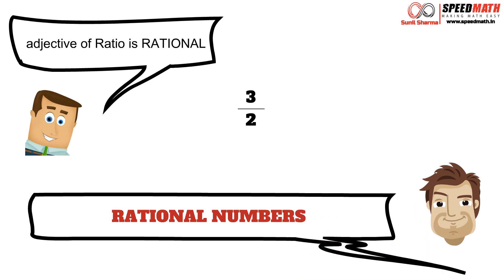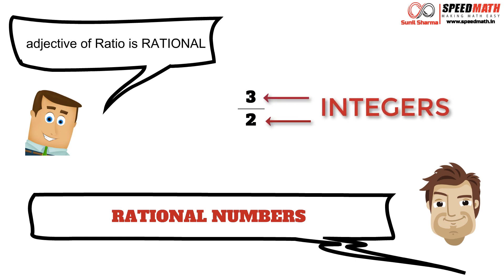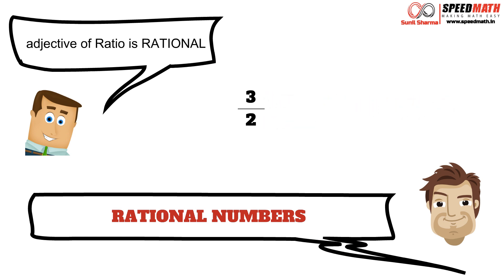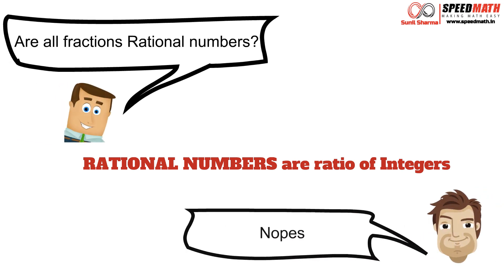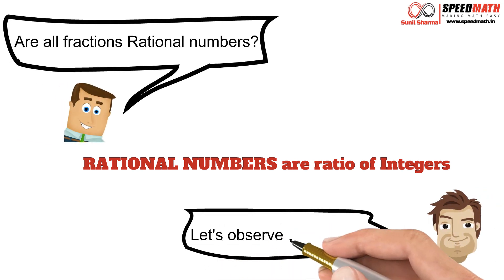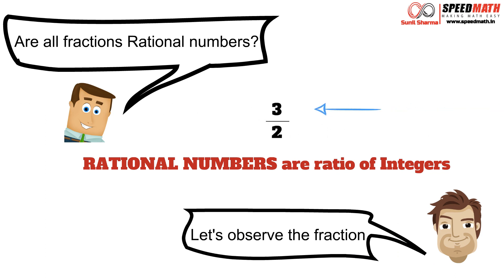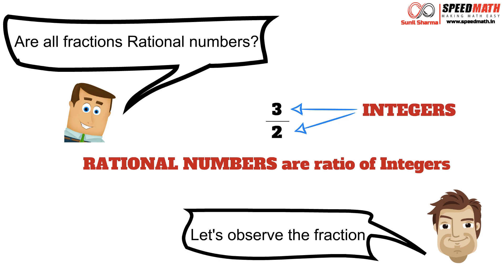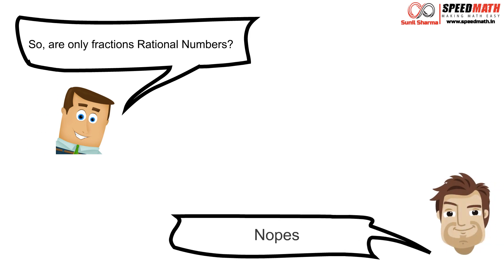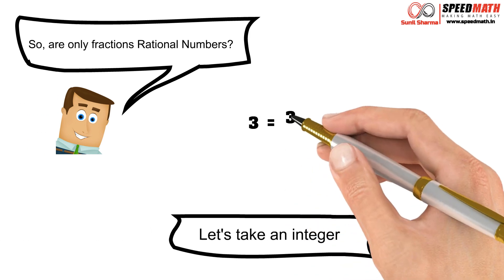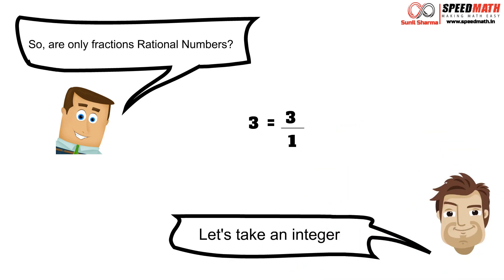Mr. Logic asks: how do we define rational numbers? Mr. Math says: the numerator is an integer and the denominator is an integer, so rational numbers are a ratio of integers. Mr. Logic asks: are all fractions rational numbers? Mr. Math says: no — for a number to be rational, both numerator and denominator have to be integers. Also, integers like 3 can be written as 3/1, where both numerator and denominator are integers, so 3 is a rational number too.